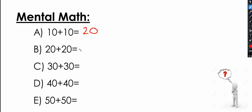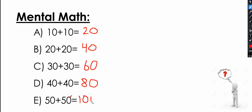20 plus 20 is 40. 30 plus 30 is 60. You can skip count by tens, or you can use the strategy where you just add the tens and then add the zero. So 40 plus 40: 4 plus 4 is 8, add the zero — 80. 50 plus 50: 5 plus 5 is 10, add the zero — 100. Those are the answers.